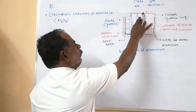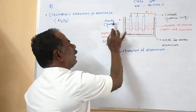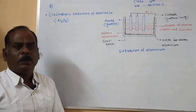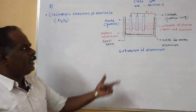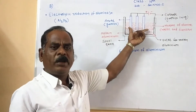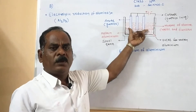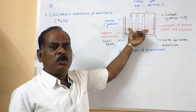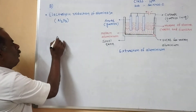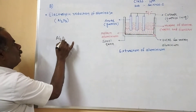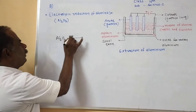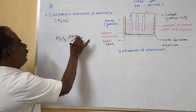Dip a set of graphite rods into the mixture and connect the graphite rods to the positive terminal of the battery, which means the graphite rods act as the anode. Then pass electricity through this molten mixture.